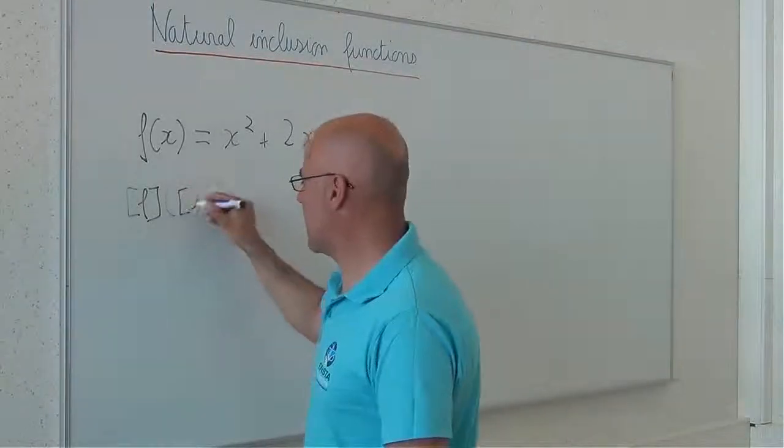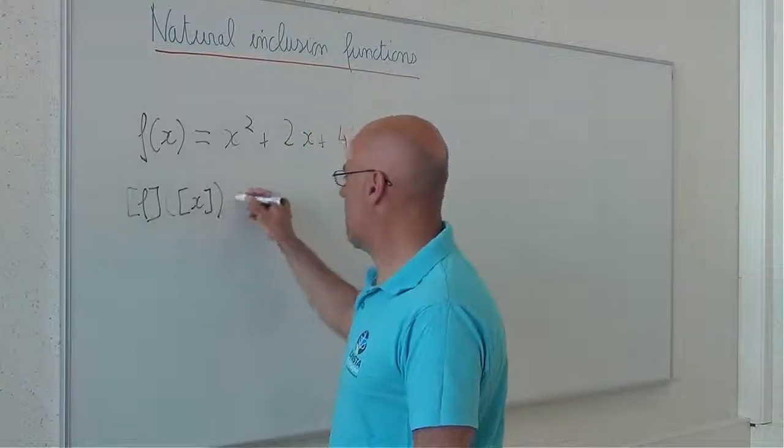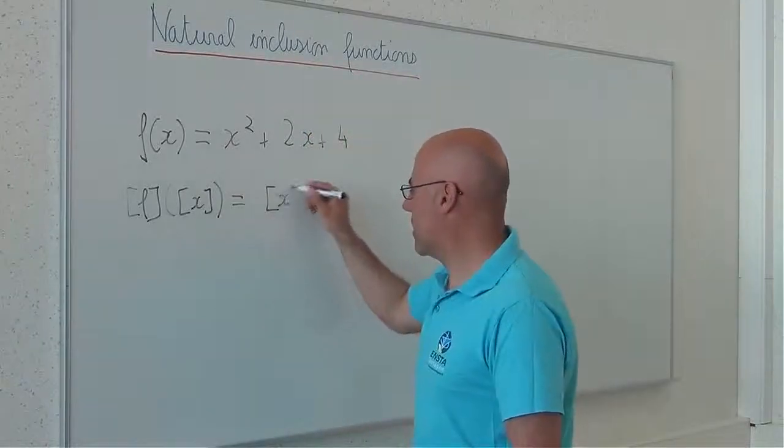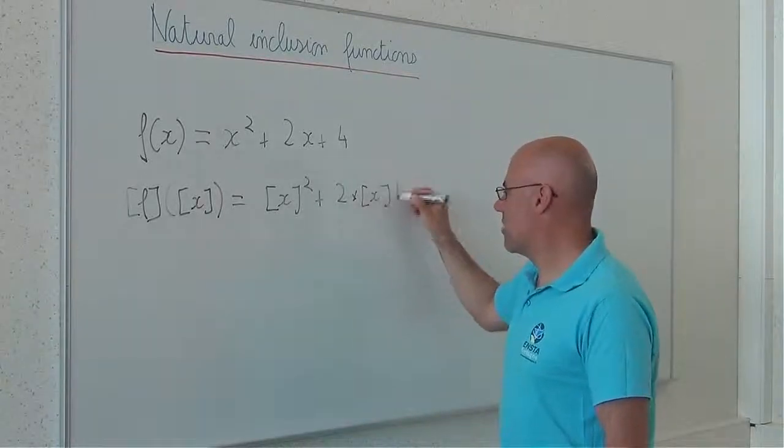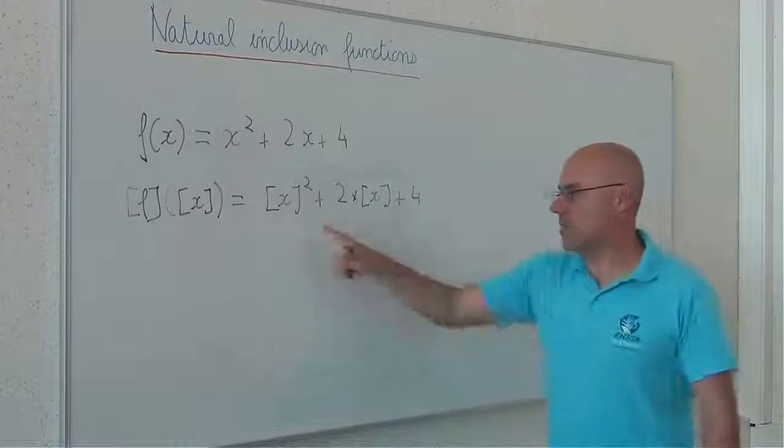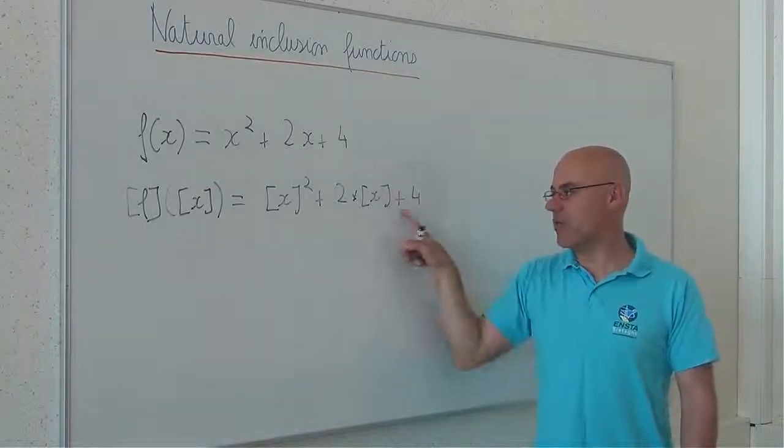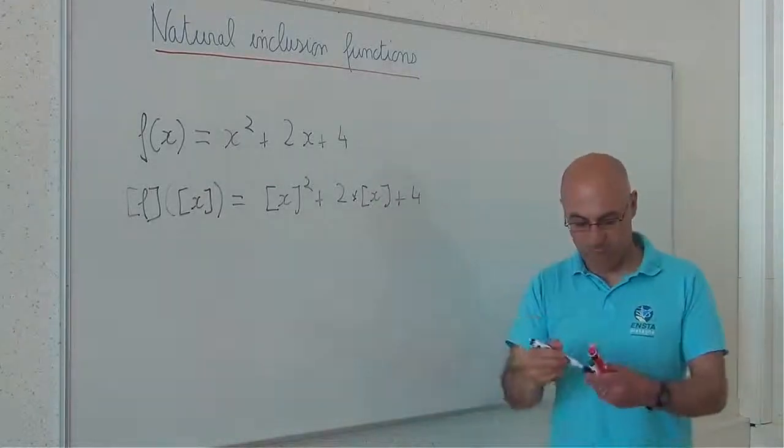It means that f will be written like [x]² plus 2 times [x] plus 4. These are intervals and here we have interval operations.